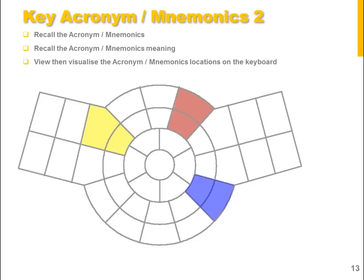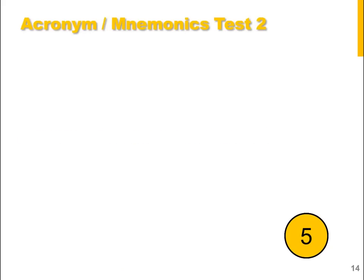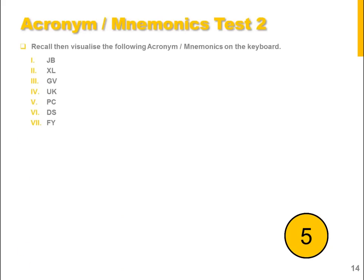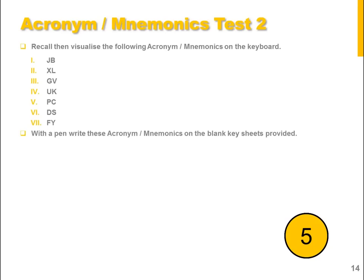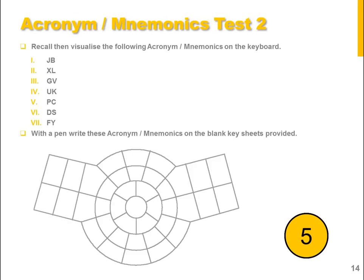Again: yellow, DS — Deep Space; red, UK — United Kingdom; blue, FY — Forever Young. Now test yourself on these new letters along with the first set of acronyms and mnemonics you learned earlier. Once again, pause the video and, using your blank keyboard diagram, see if you can remember where each of the pairs of letters are located.